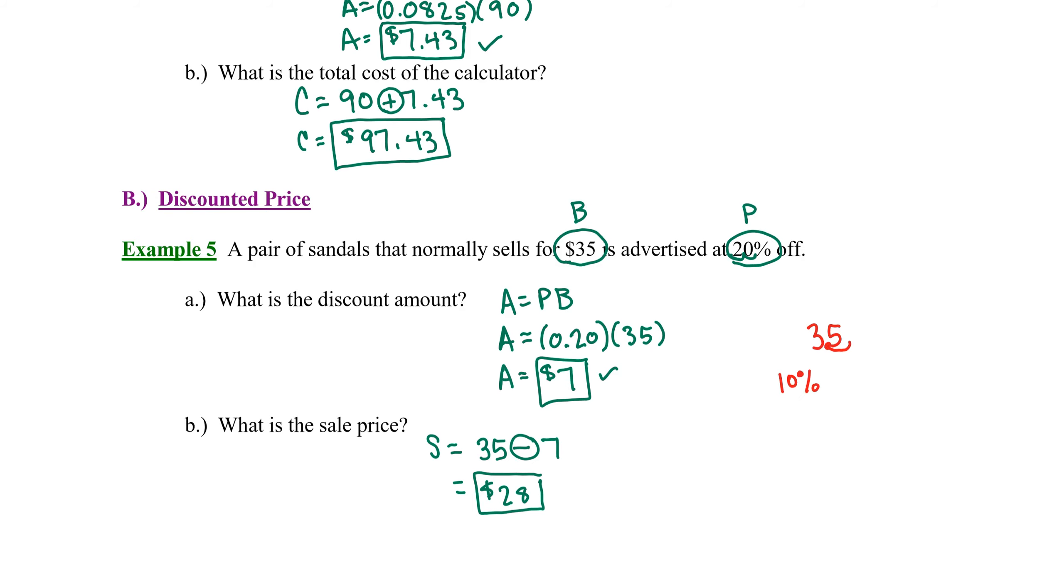So 10% of $35 is $3.50. But remember we wanted to know 20%. To find 20%, just double that 10%. So 20% would be 2 times $3.50, or $7.